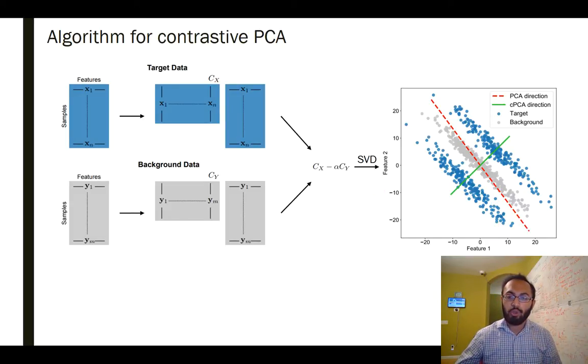And this is just a toy example in two dimensions. Here we have the target data set in blue. If we were to do PCA on the target data set, what we would find is that the principal component direction is indicated here in the red dashed line, because that's where most of the variation is.